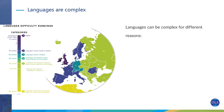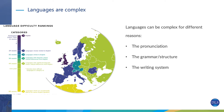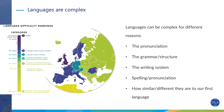We all know that languages are complex, but they can be challenging for very different reasons. Some languages have really difficult pronunciation — maybe tones or sounds that don't exist in our first language. Some have very complex grammar structures. Sometimes languages have different writing systems. The spelling might not match the pronunciation, for example if you're learning French. And a big factor is how similar or different the language is to our first language.